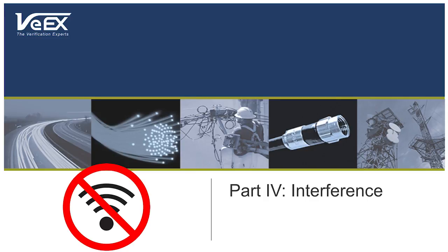Interference is one of the most discussed topics in Wi-Fi, but since you can't see interference visually, it's hard to track down and sources of interference are all around you. In the fourth installment of our Wi-Fi Air Expert series, we'll discuss various sources of Wi-Fi interference and how they affect the signal.